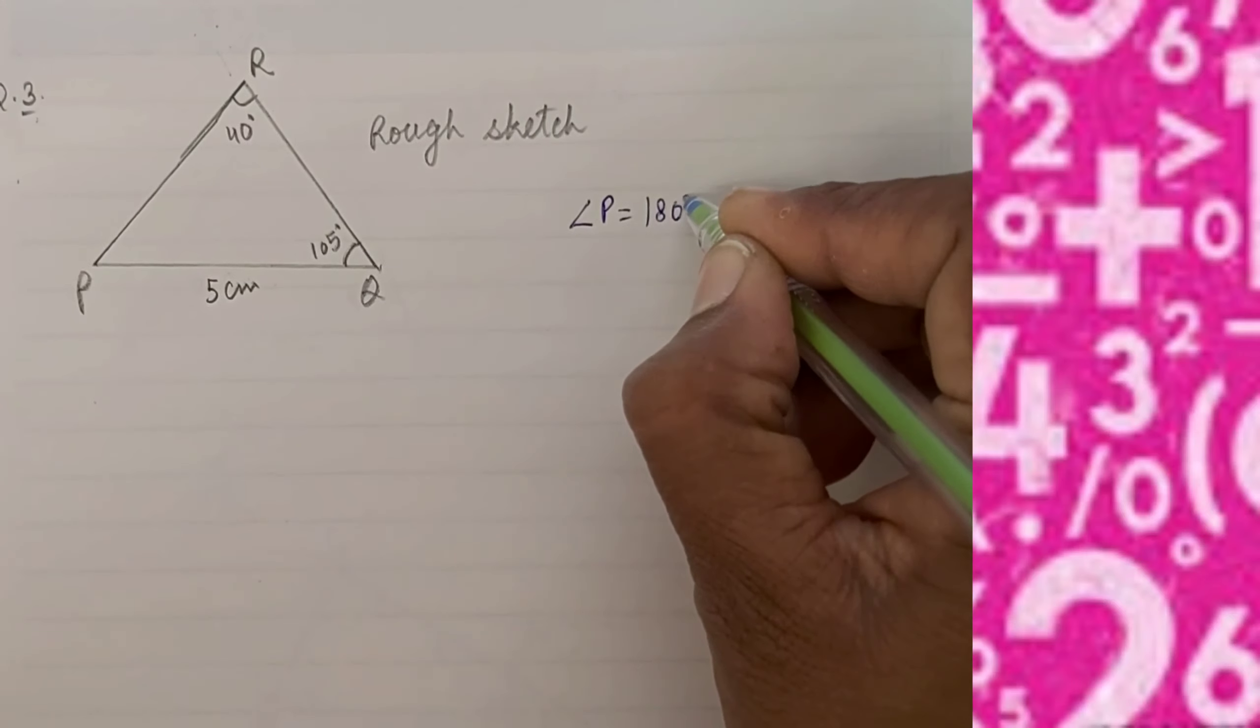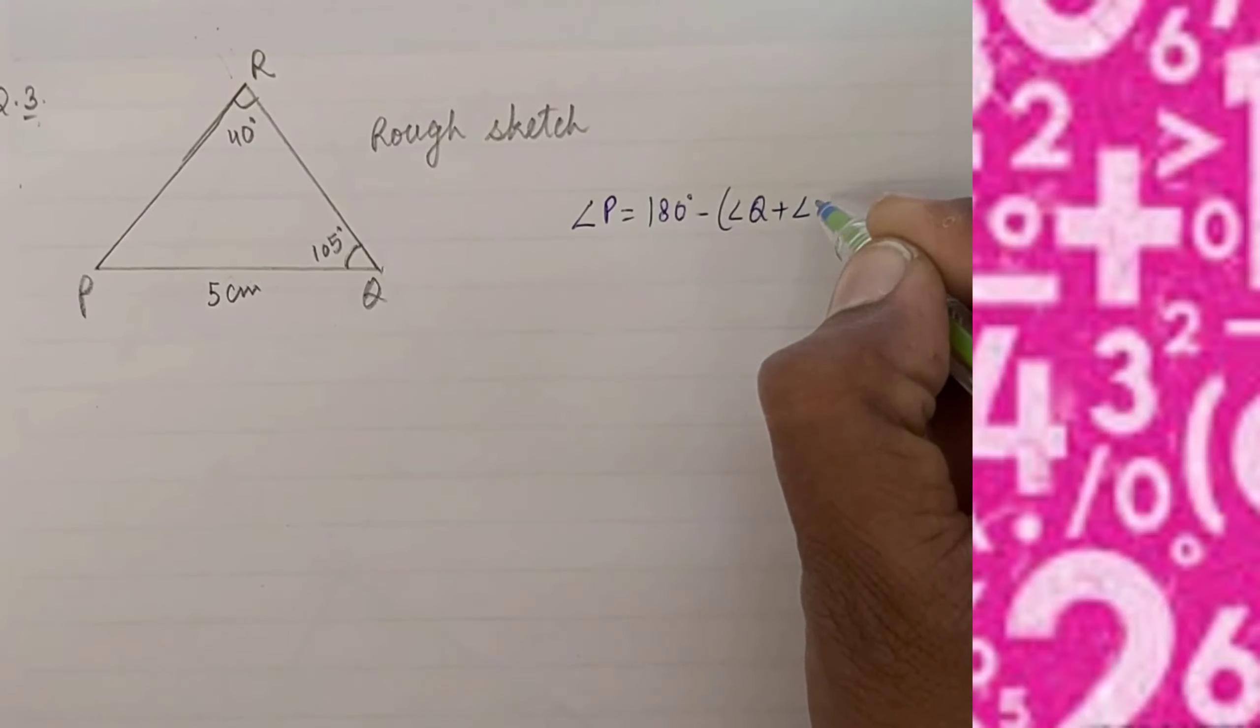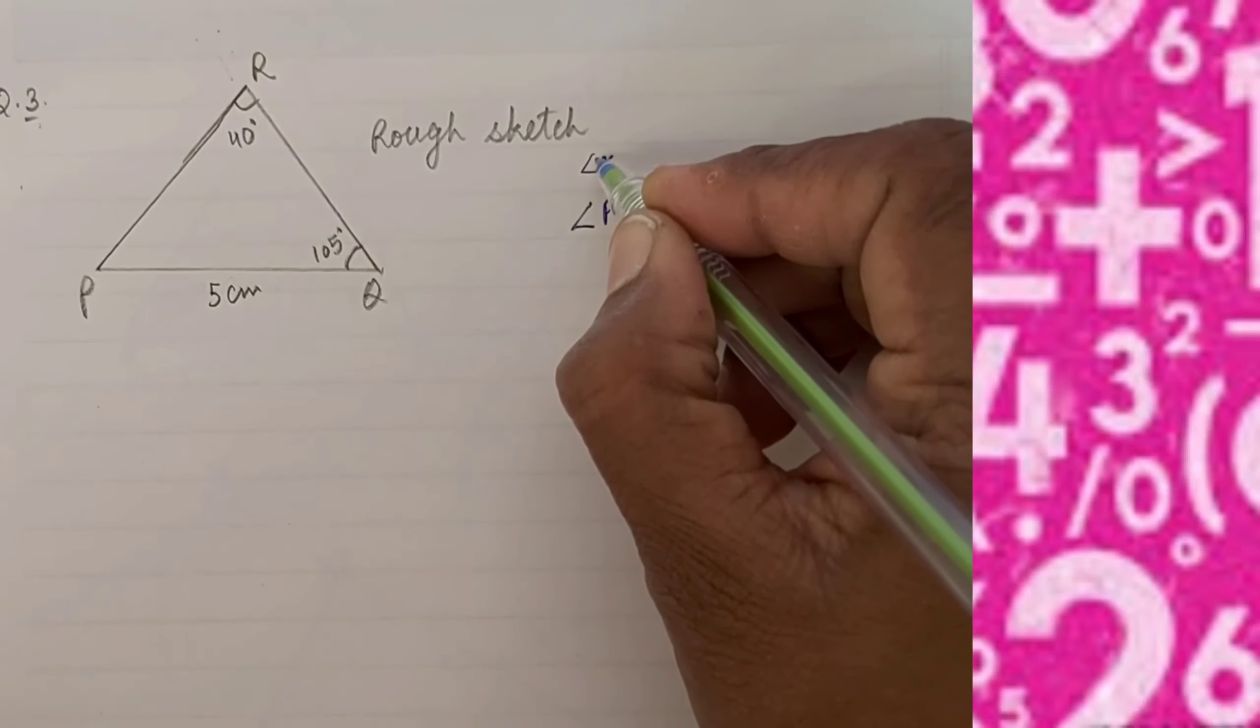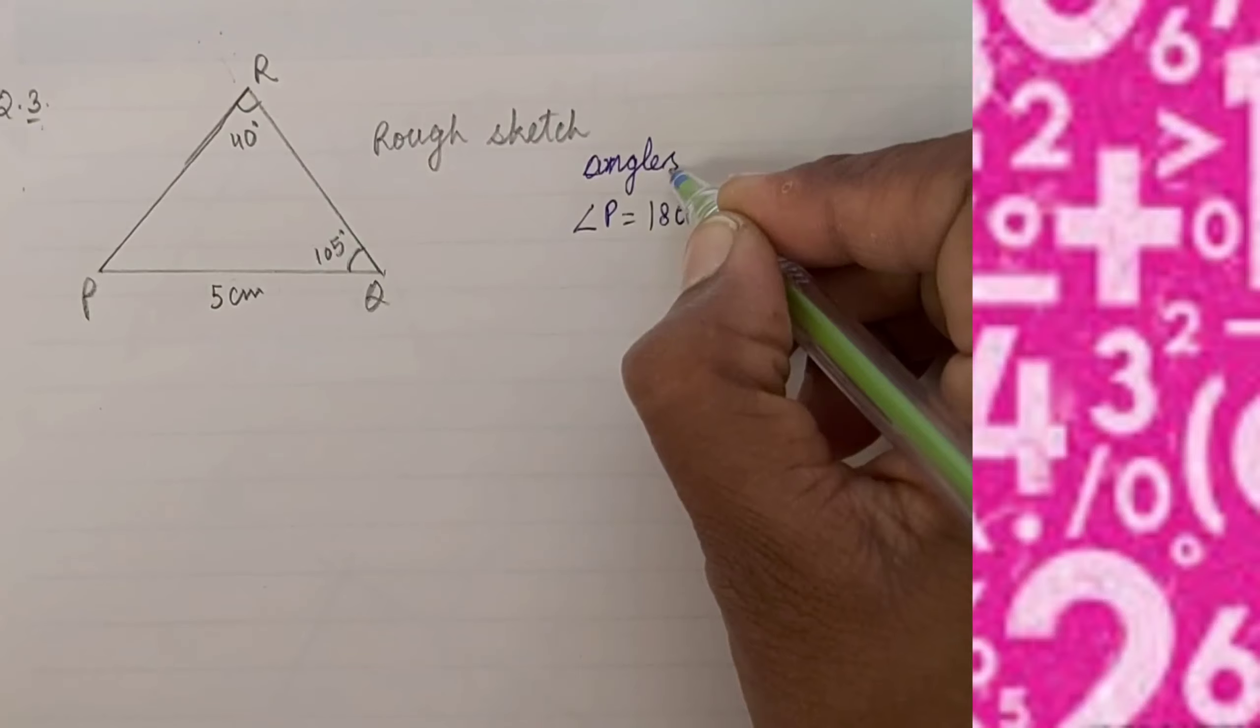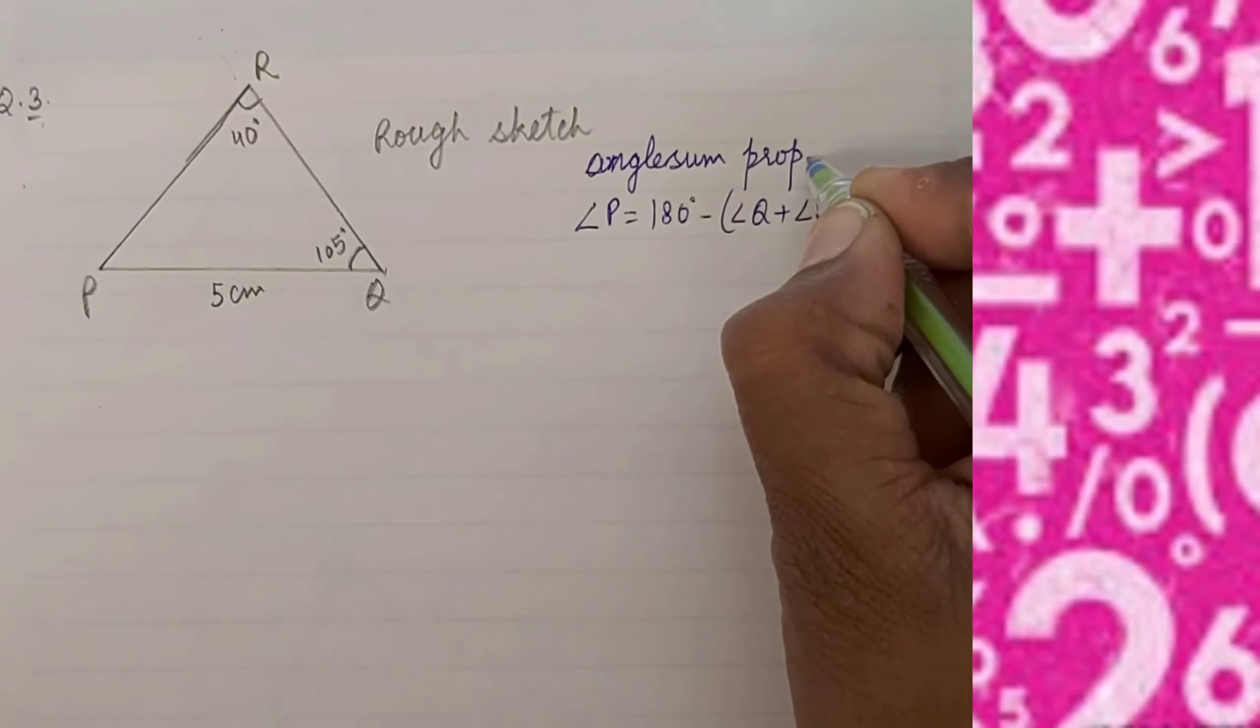So we will find angle P first by using the angle sum property of triangles. As you know, we have done the angle sum property.